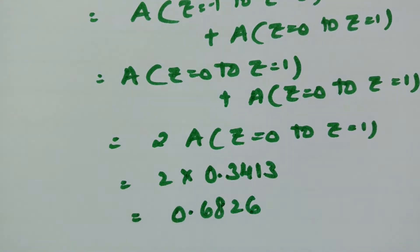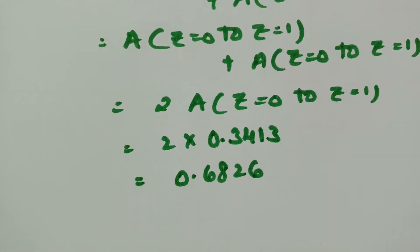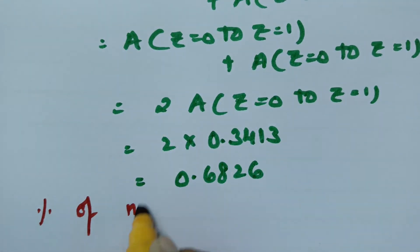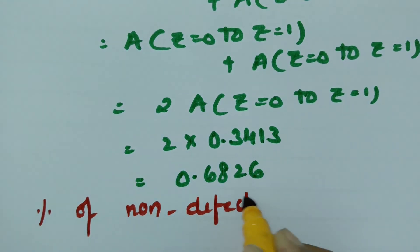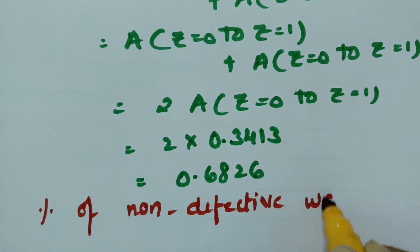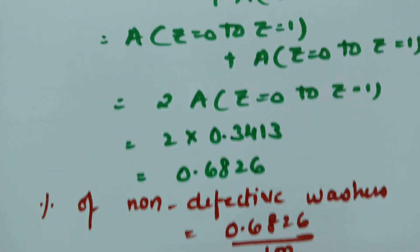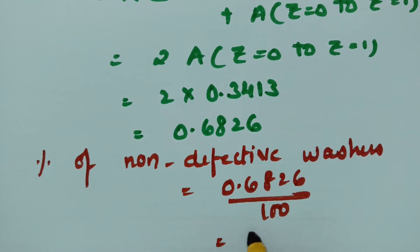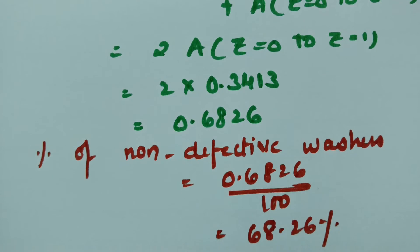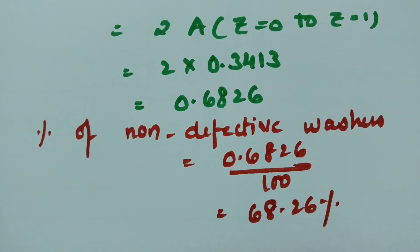Therefore the percentage of non-defective washers is 0.6826 multiplied by 100, which is equal to 68.26%, approximately 68%.